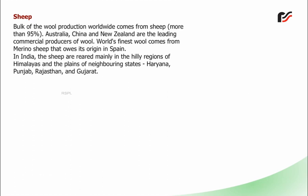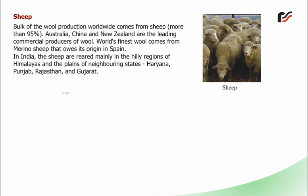Bulk of the wool production worldwide comes from sheep, more than 95%. Australia, China and New Zealand are the leading commercial producers of wool. World's finest wool comes from merino sheep that owes its origin in Spain. In India, the sheep are reared mainly in the hilly regions of Himalayas and the plains of neighbouring states — Haryana, Punjab, Rajasthan and Gujarat. The important breeds of Indian sheep are given in the following table.